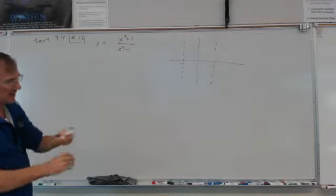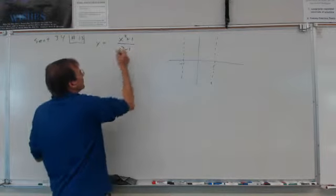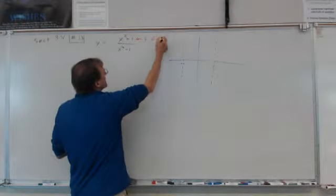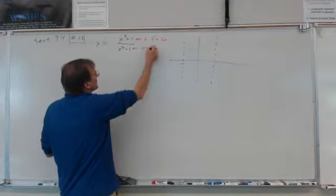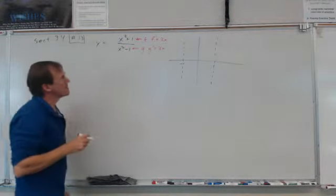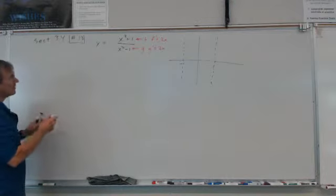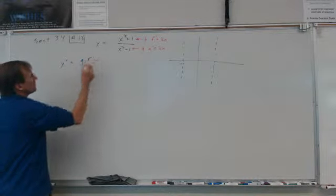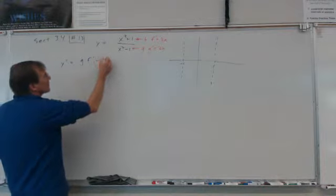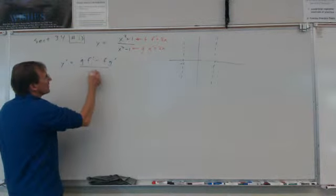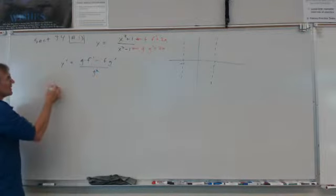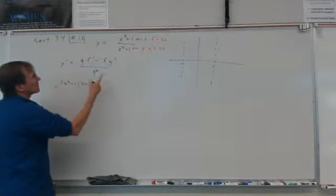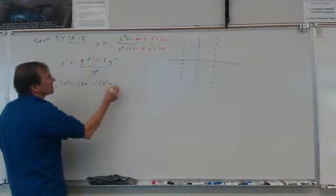We're going to do the second derivative test, starting by taking the first derivative. It's easiest if we use the quotient rule here. We'll call the numerator f, so f prime equals 2x. And if the denominator is g, then g prime will equal 2x also. So y prime equals low d high: g times f prime, minus high d low: f times g prime, all over g squared.